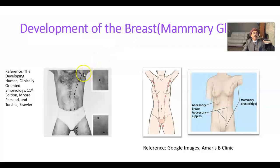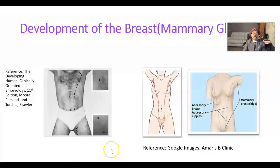Here we are seeing polythelia — multiple nipples. In male individuals it may also occur; anywhere along the milk line we may have an extra nipple, which we call polythelia. Here we are seeing one more breast — a supernumerary breast. It may be in the axilla or under the breast itself. This is called polymastia, and a polymastic breast may be functional after delivery of the baby.